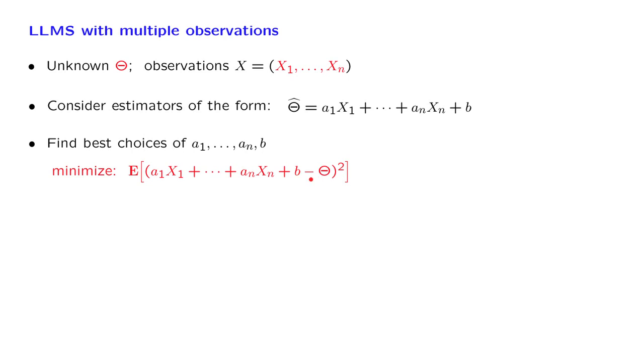So this is a well-defined optimization problem. We have a quantity which is a function of certain parameters, and we wish to find the choices for those parameters or those coefficients that will make this quantity as small as possible.